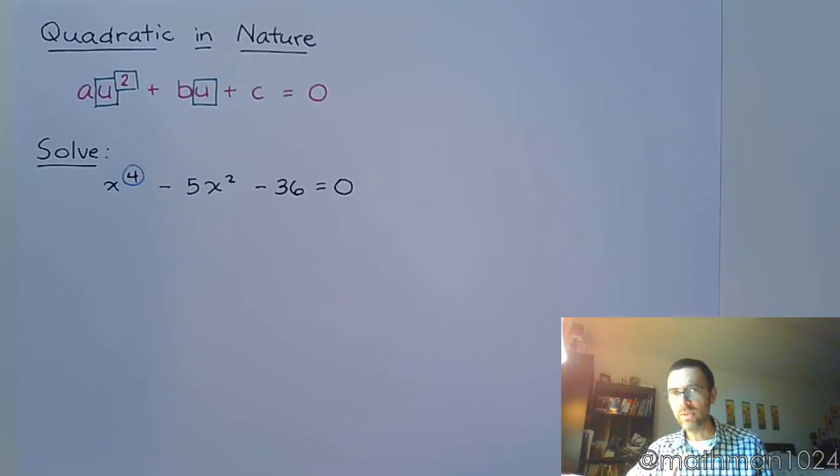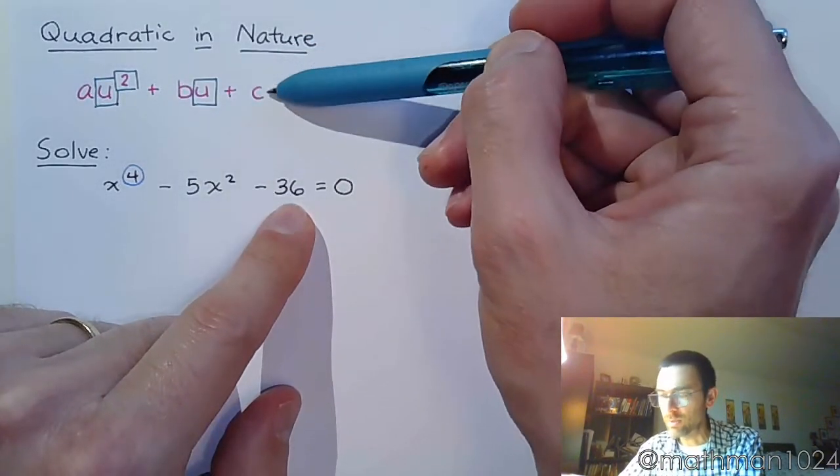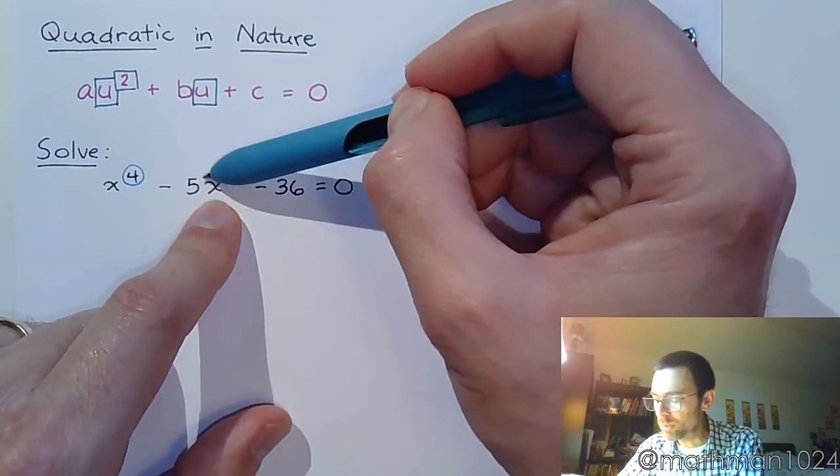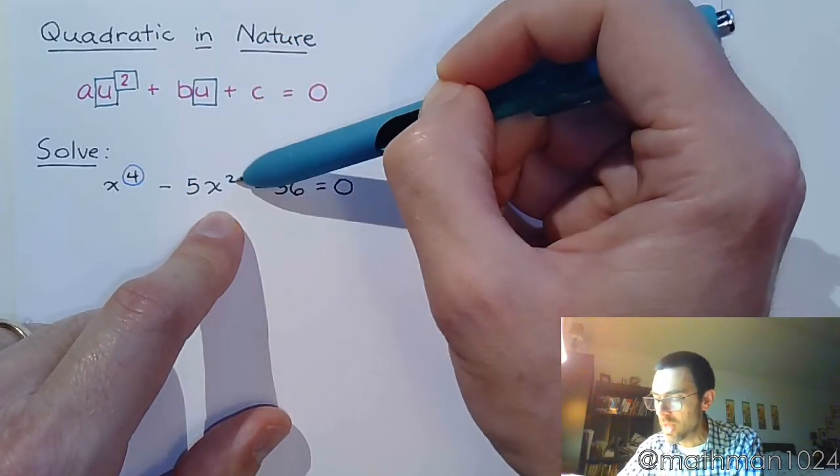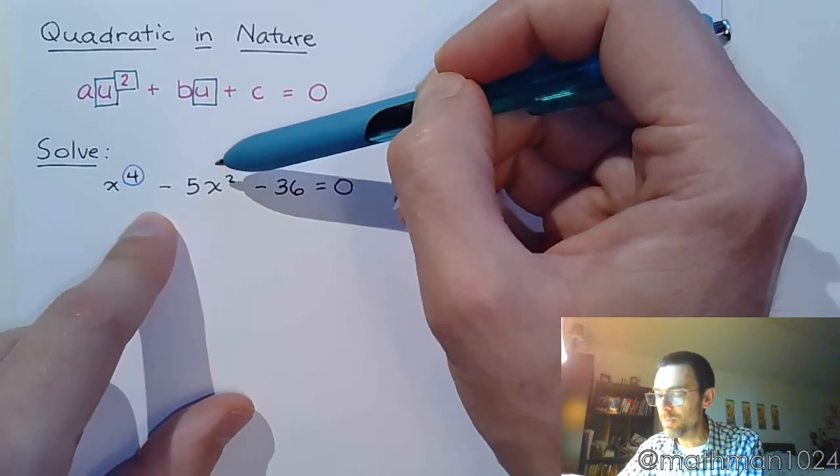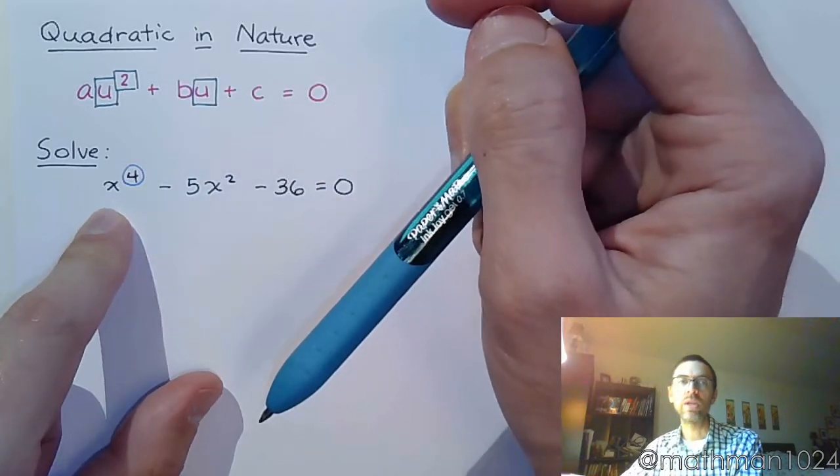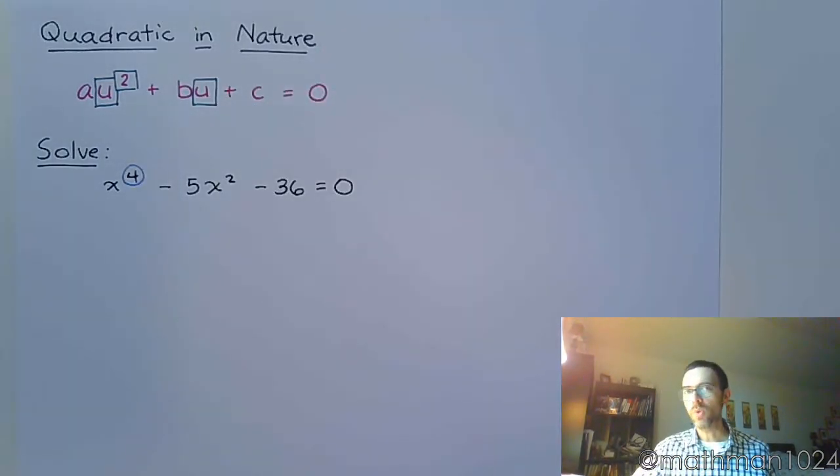But I do want you to see how this is quadratic in nature. You've got your constant term, the c. You have a variable here, don't worry about the 5, but it's the variable piece, x². And you'll see that this is repeated over here with twice the power. So we go from x², you double that to get x⁴. So this is an example of something that's quadratic in nature.